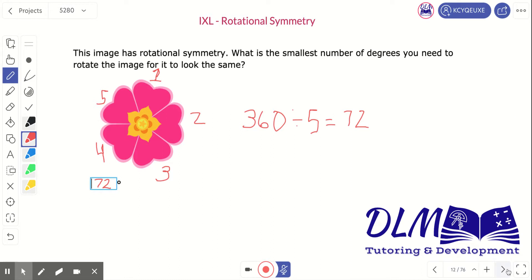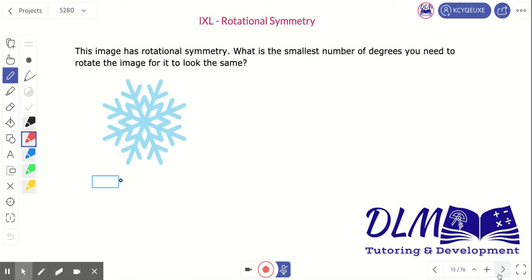Let's try it again. The same type of problem. We need to know the smallest number of degrees you need in order to rotate the image for it to look the same.